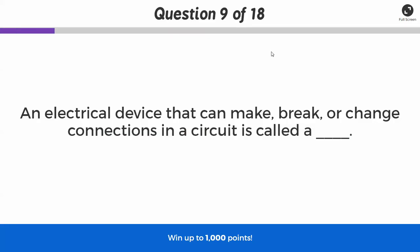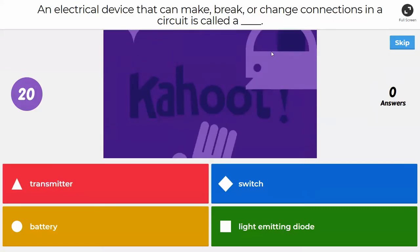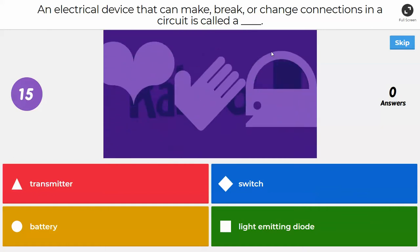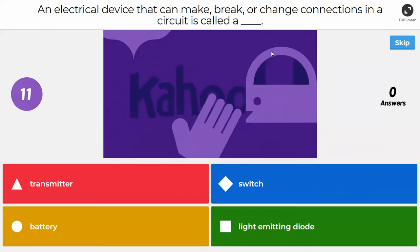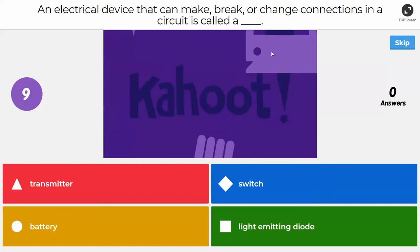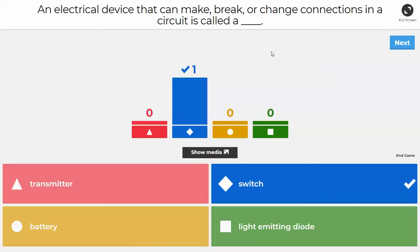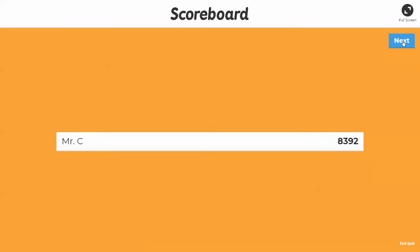All right, next question. An electrical device that can make, break, or change connections in a circuit. What do you call that? Is it a transmitter, a switch, a battery, or a light-emitting diode, or LED? Which of these can change connections in a circuit? A lot of you have them on the walls in your house. Yeah, switches. Switches is the correct answer to that. Don't see it. We didn't see a whole lot of circuits with switches in our examples.